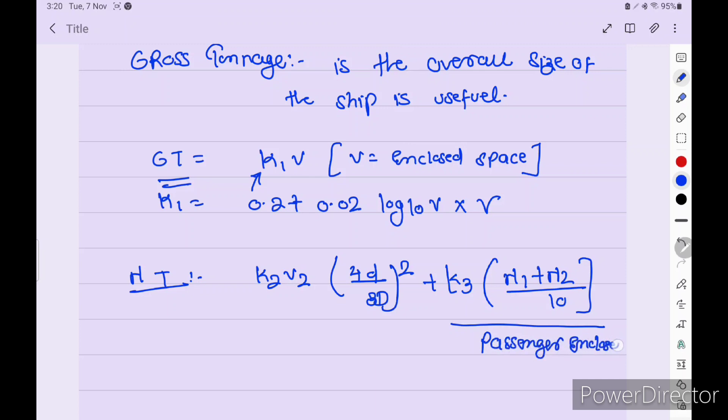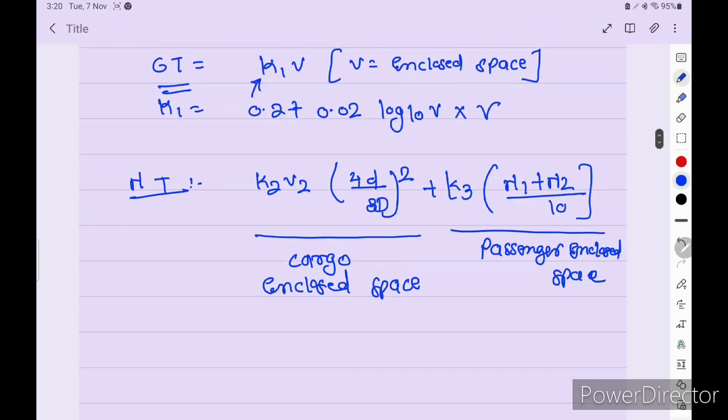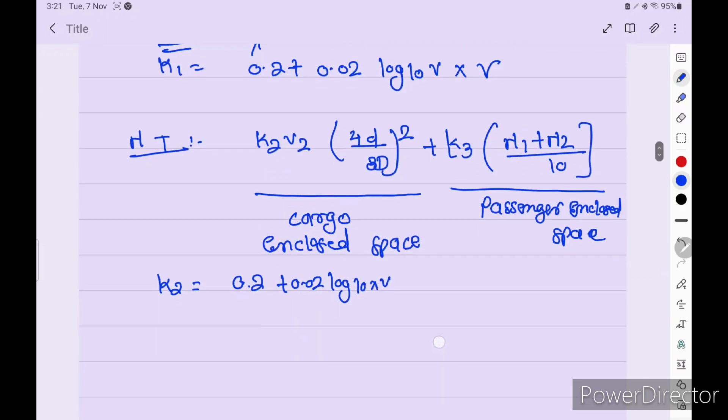Passenger enclosed space. This is for cargoes. The value of k2 is 0.2 plus 0.02 log base 10 into V.